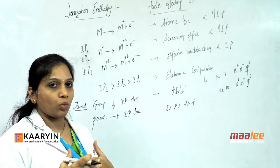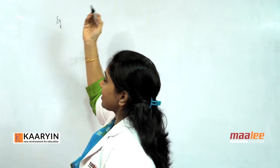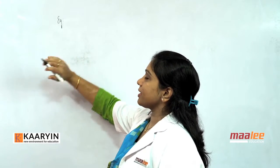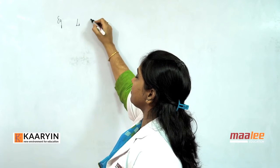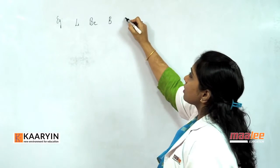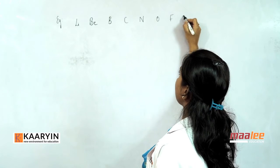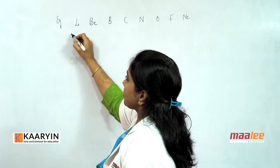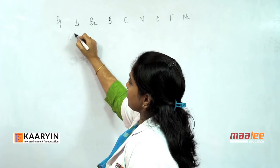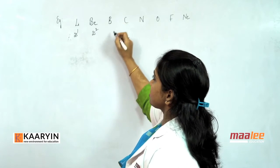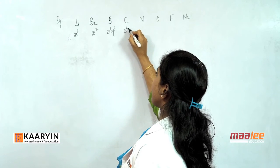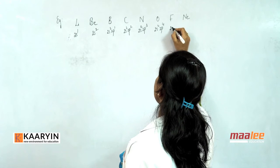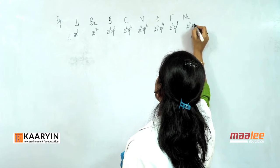Now let us apply this and see what happens to IP values in a period. Consider the second period elements: lithium, beryllium, boron, carbon, nitrogen, oxygen, fluorine, neon. Their outermost configurations are: Li: 2s¹; Be: 2s²; B: 2s², 2p¹; C: 2s², 2p²; N: 2s², 2p³; O: 2s², 2p⁴; F: 2s², 2p⁵; Ne: 2s², 2p⁶. In general, in a period, effective nuclear charge works well and IP values increase from left to right.